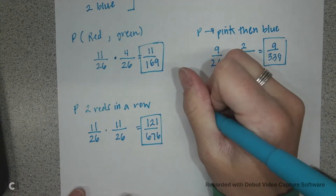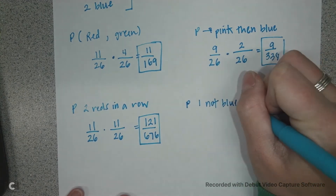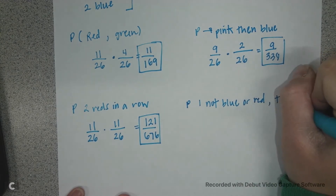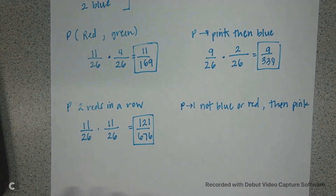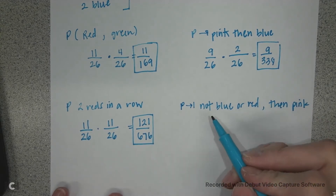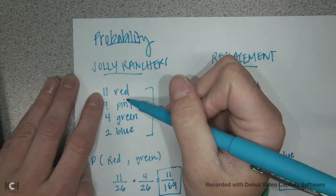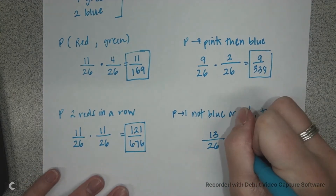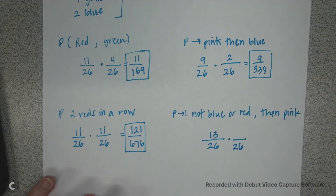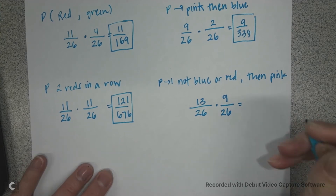Now we're going to figure out the probability of choosing one that is not blue or red, then pink. All you have to do is add the probabilities that are not blue and not red. We still have 26 total Jolly Ranchers, but those that are not blue or red are pink and green — so 9 and 4 make 13. I've got 13 out of 26, and since I've replaced it, my pink Jolly Ranchers are 9 out of 26. When I multiply and reduce I get 9 over 52.